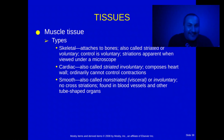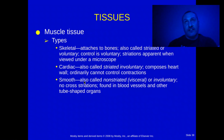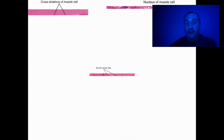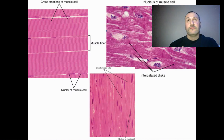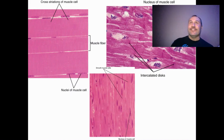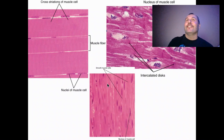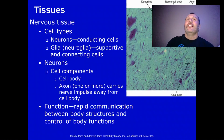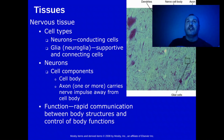Muscle tissue will be covered again in the muscular system, but briefly: we have skeletal, cardiac, and smooth muscle. Skeletal and cardiac are striated; smooth is non-striated. Skeletal is voluntary; cardiac and smooth are involuntary. You cannot directly stop or control your heart rate — cardiac muscle is involuntary.